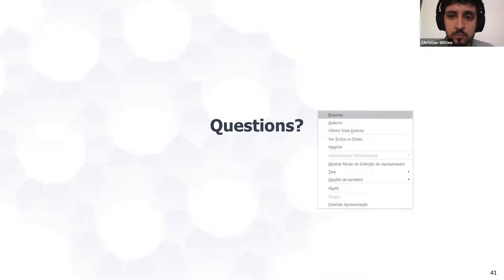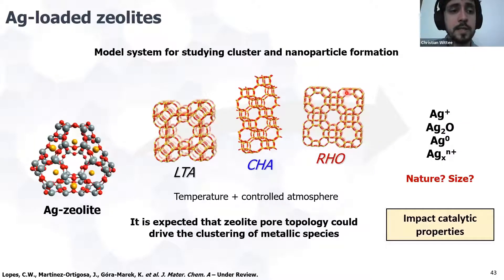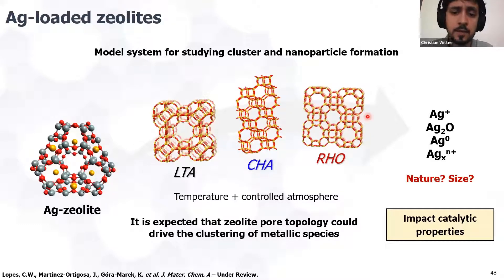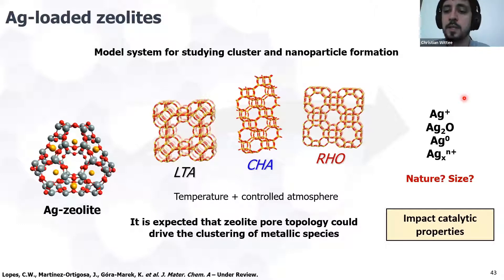Now I'm moving to the second topic of my talk: silver-loaded zeolites and their application in the selective oxidation of ammonia. Silver-loaded zeolites represent a very good model system for studying cluster and nanoparticle formation. We can inspect the zeolite pore topology — I brought three different zeolite topologies — and we think pore topology could drive the clustering of different metallic species. By applying temperature in different atmospheres, we can obtain silver(I)/silver oxide, silver nanoparticles, or silver clusters of different nuclearity, and the nature and size of these species impact catalytic properties.